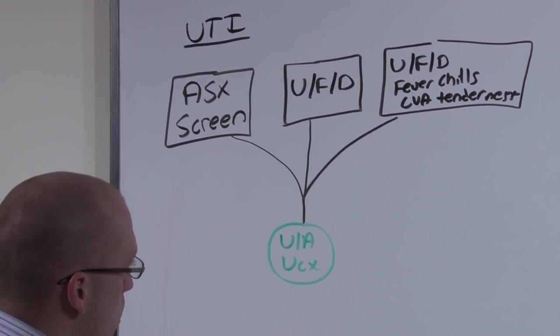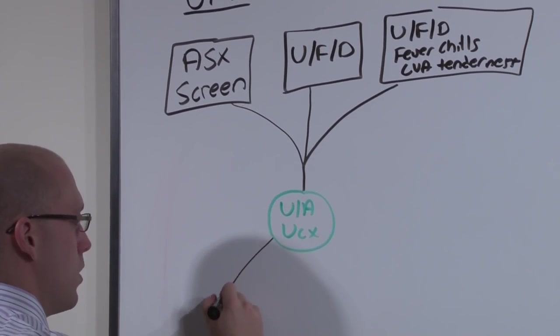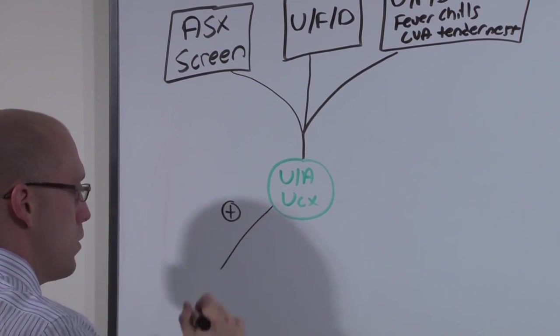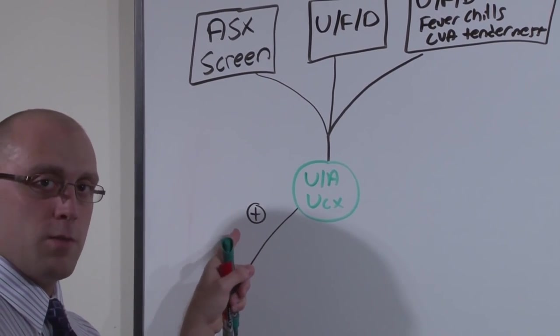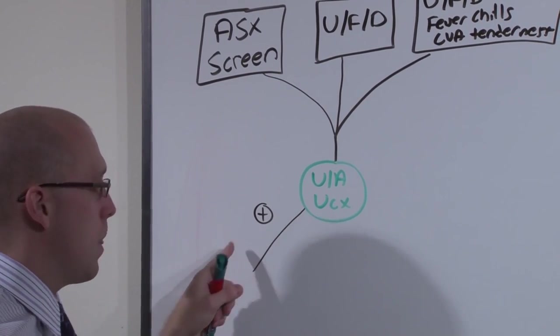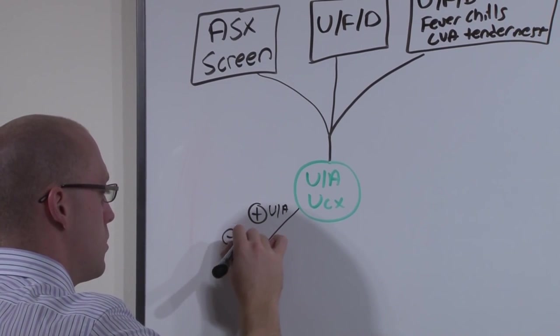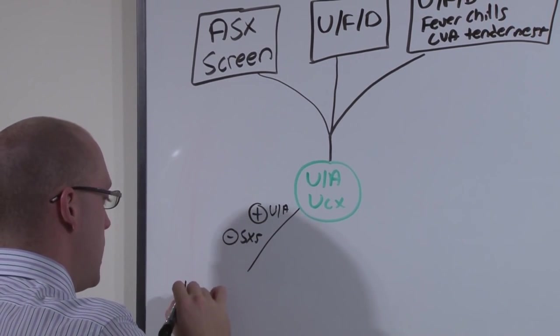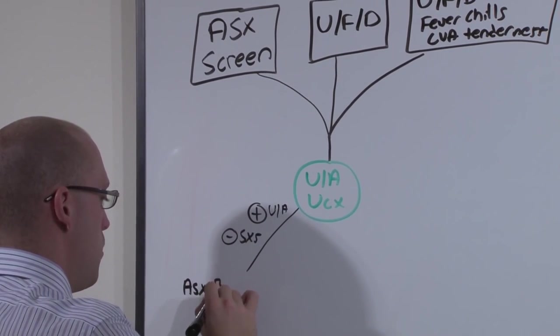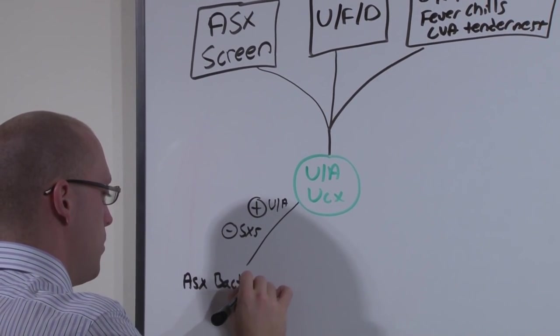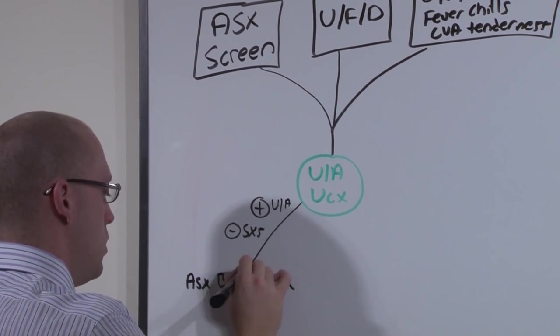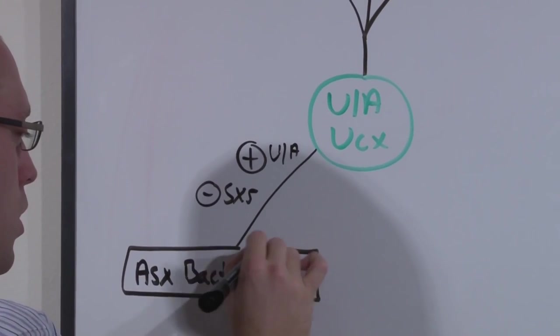So if the patient only had a positive urine - and a positive urine means leukocyte esterase, nitrates, positive bacteria, and negative squamous cells - positive UA but no symptoms, this was an asymptomatic bacteriuria. There's bacteria in the urine, but mom doesn't even know.